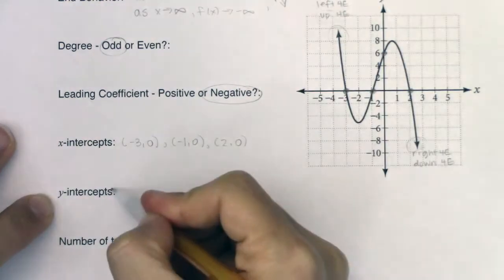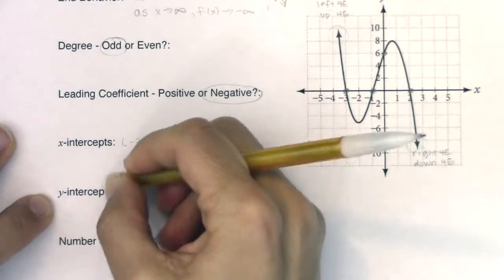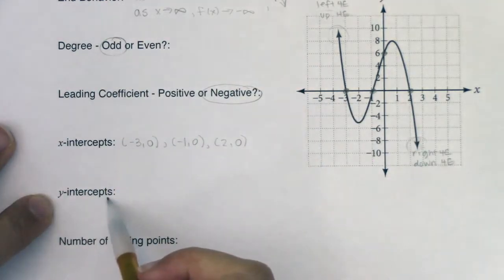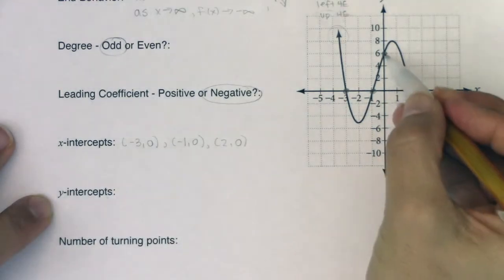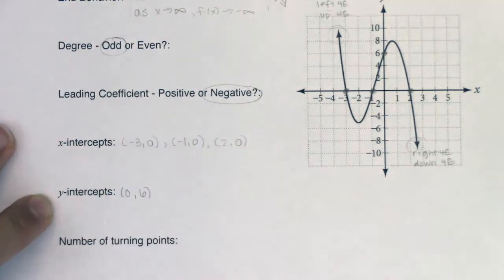And even though this is plural, it technically shouldn't be, right? You're only ever going to have one y-intercept. Or I should say, if you did have more than one y-intercept, then you wouldn't have a function. And this is definitely a function. It passes the vertical line test. So this is 0, 6.